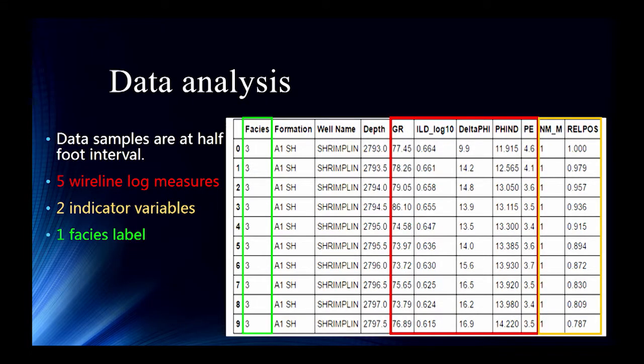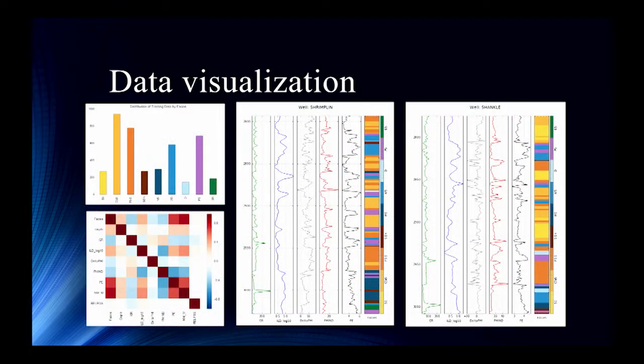And so before we use this model, we need to do some data analysis to explore the features about this data. So in the red box, it's the five wireline measurement. I only take the first 10 rows to display. And the yellow box is the two indicator variables, like geological constraints. And this column is our facies label. So this is our target to predict for our wells. And also you have some other features like well name, a formation for each depth and depth.